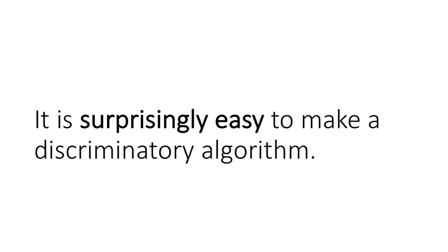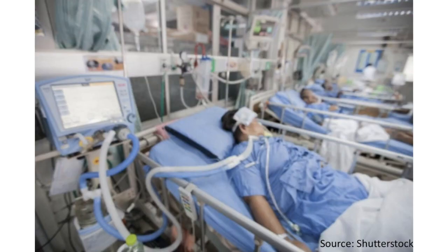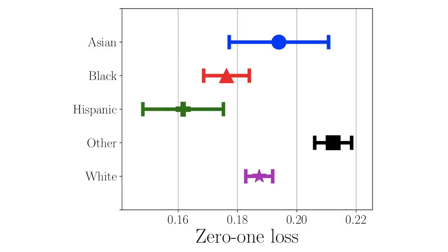When I started my PhD, I was shocked by how easy it is to make a discriminatory algorithm, even accidentally. As a project, I trained a classifier to predict hospital mortality from clinical notes in the intensive care unit. Better predictions could help doctors treat more effectively. Imagine my surprise when my logistic regression showed differences in accuracy by race, especially high errors for Asians. Why?